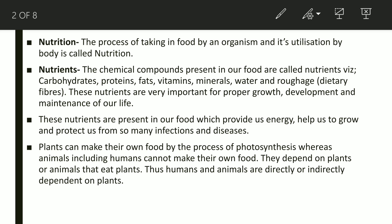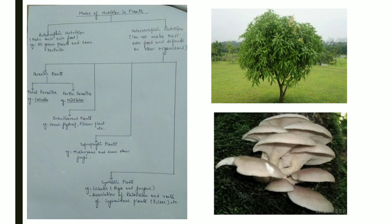As we know, plants can make their own food, and all animals directly or indirectly depend on plants for their food. This mind map shows the mode of nutrition in plants, which can be divided into autotrophic nutrition and heterotrophic nutrition. The first image shows a green plant — an autotrophic plant — and the second shows a non-green plant, which is a heterotrophic plant.